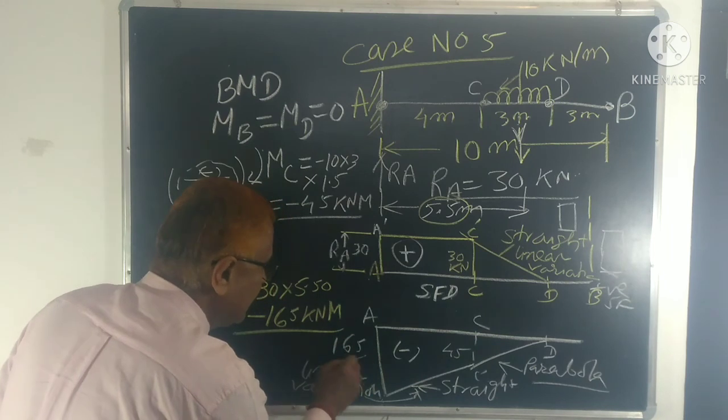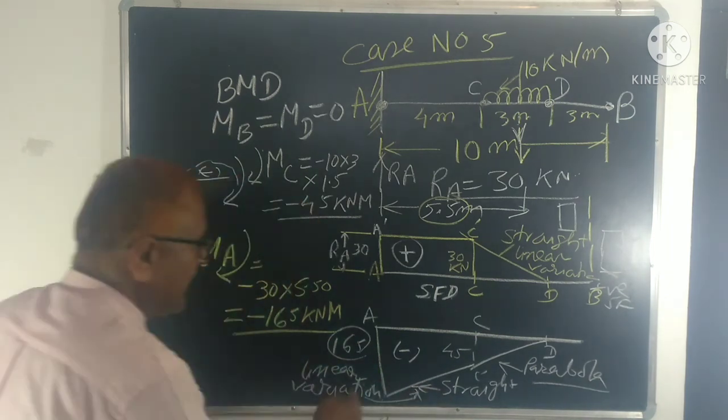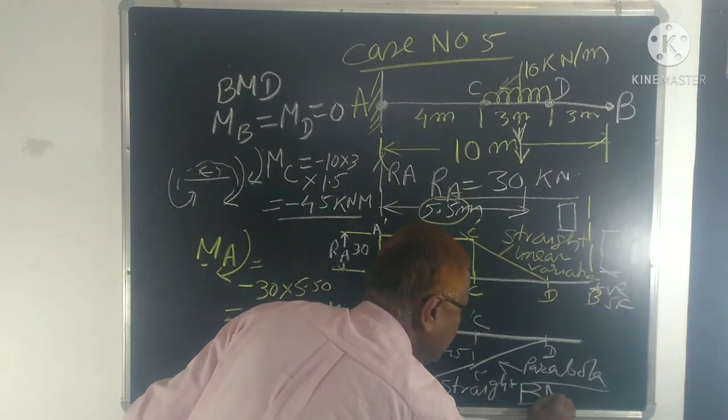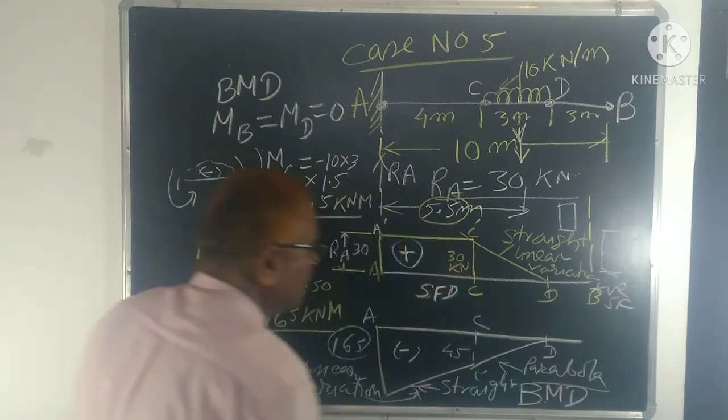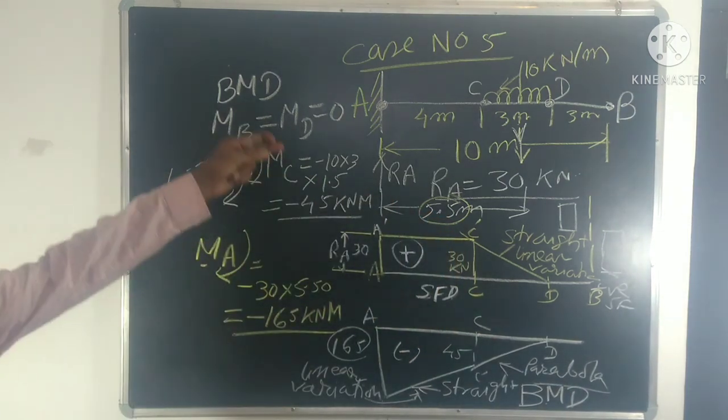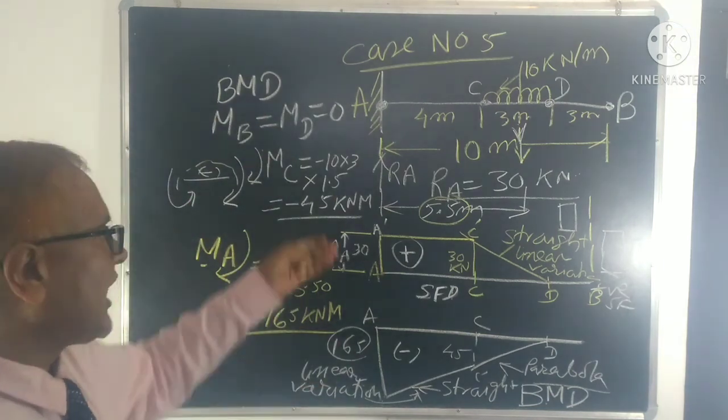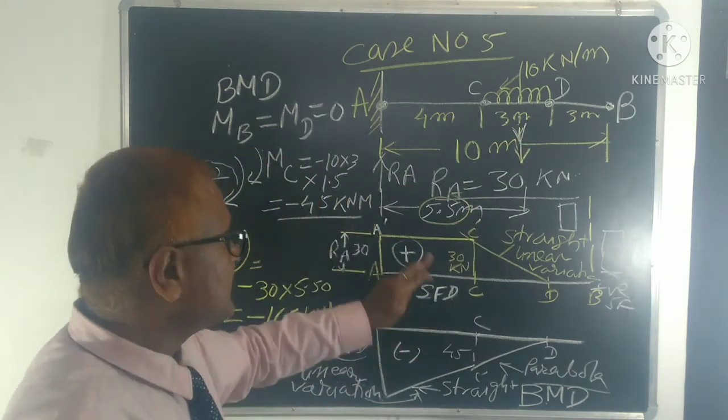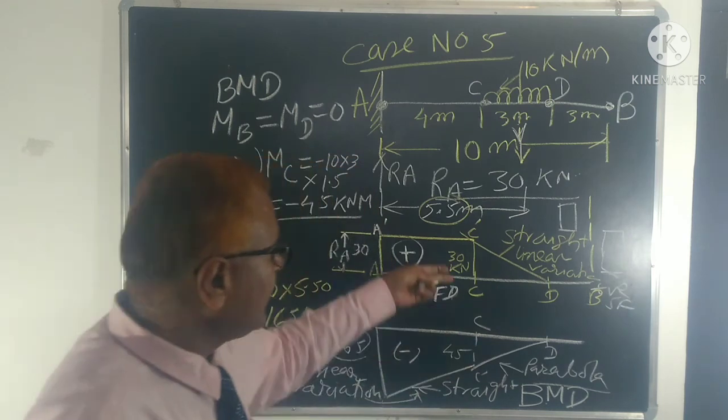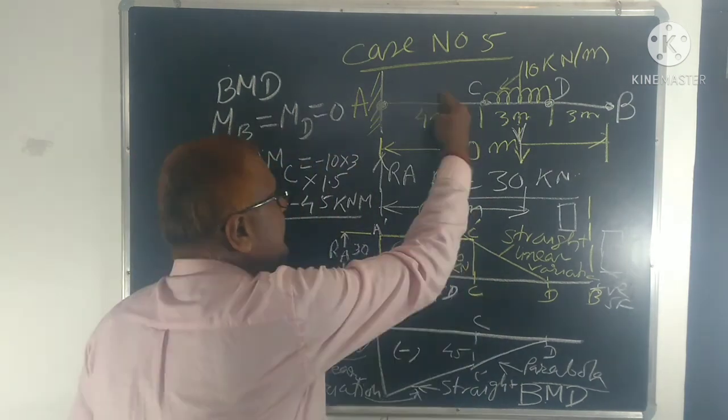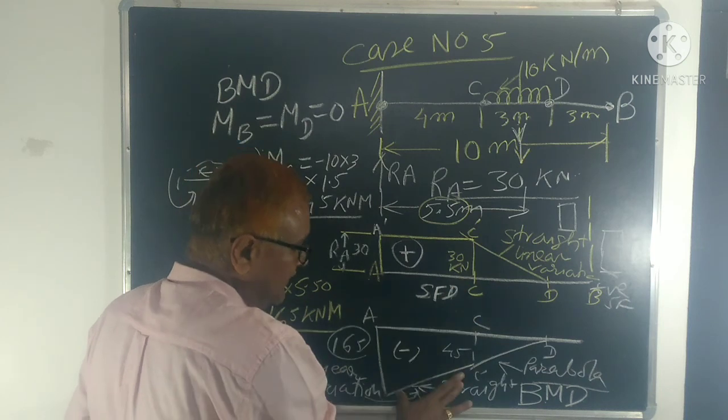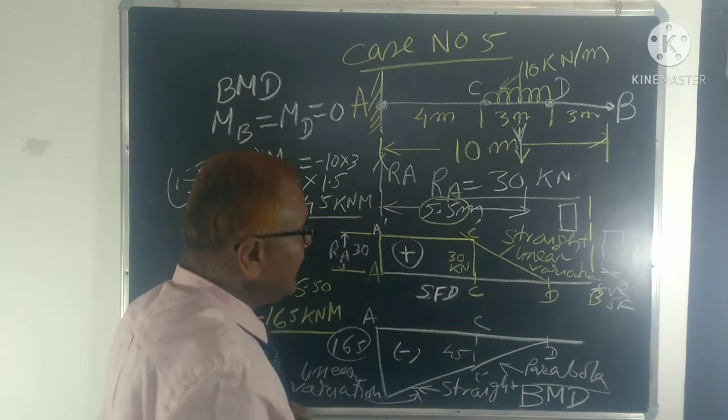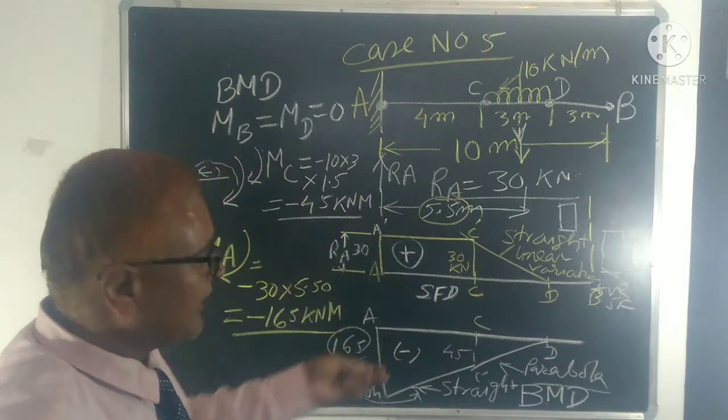This will be linear variation. Write minus here and here 165, 165 write. Okay, and this is the bending moment diagram. Don't forget to write this is BMD, bending moment diagram. So you have seen how when a cantilever beam has load placed anywhere, in this way you will find shear force and bending moment diagram. Both will be like this. Both bending and shear force diagram will be like this, just a little calculation change.